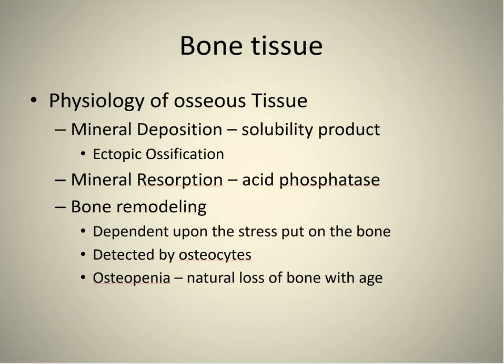Slide 18 covers the physiology of osseous tissue — mineral deposition and solubility product. You don't want calcium and phosphate to be in high concentration in the same area. When osteoblasts want to make bone, they let calcium come in. There's lots of phosphorus inside cells and very little calcium, and then bone can be laid down. Unwanted bone formation is called ectopic ossification.